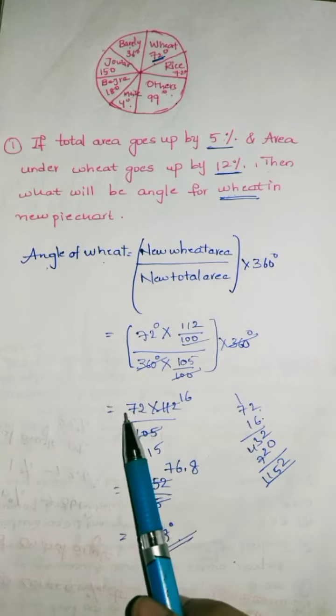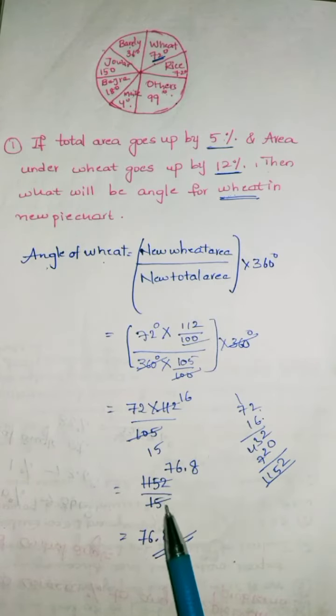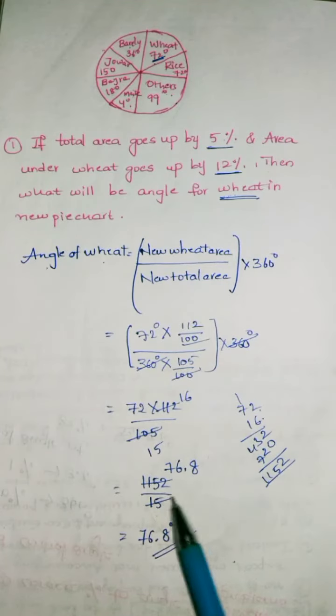72 into 16 is 1152. 1152 by 15 is 76.8 degrees.